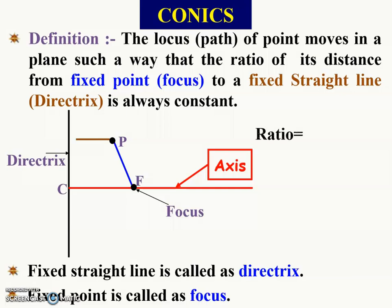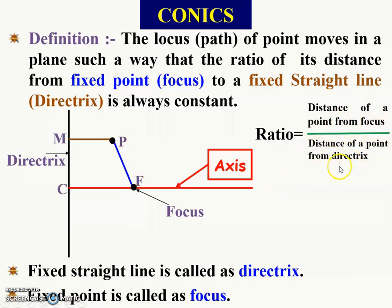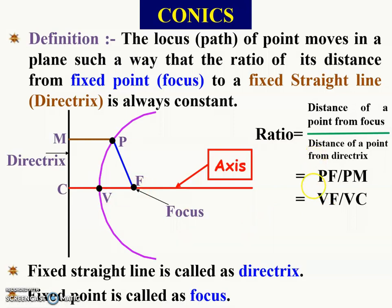That ratio is PF divided by PM — the distance of a point from the focus, PF, divided by the distance of that point from the directrix, PM. Now let us find another point V. The ratio for V will be equal to VF divided by VC. If these two ratios are the same, we can similarly find a number of points such that the value of that ratio is constant, and when we connect all these points, we get a curve known as a conics or conical curve.